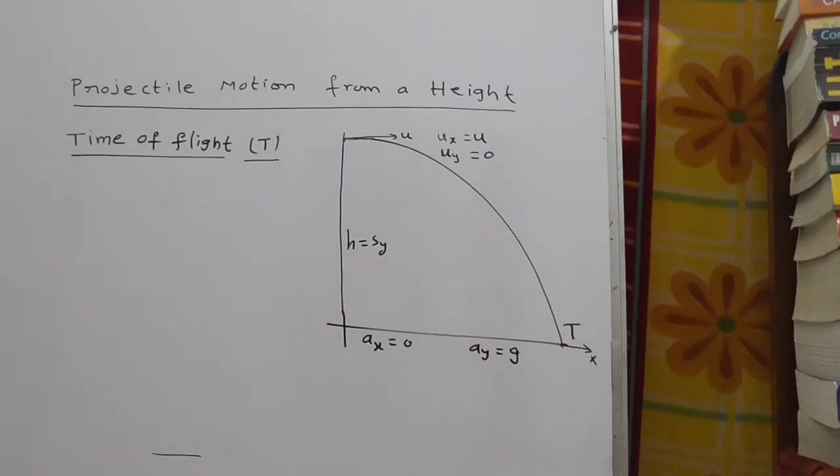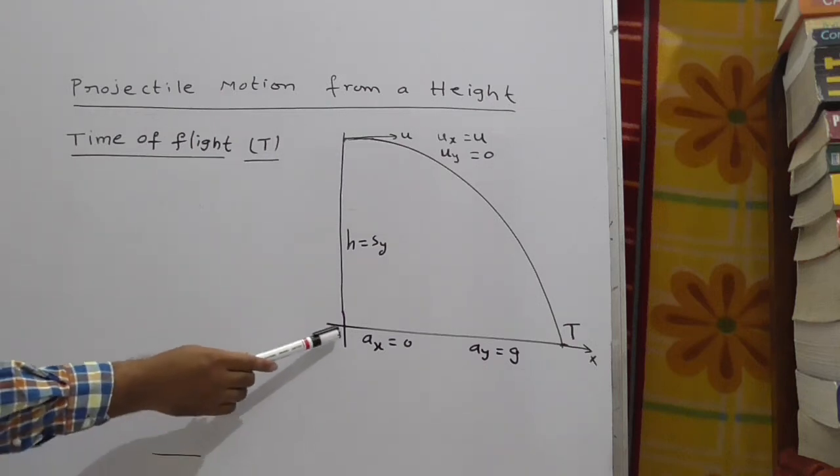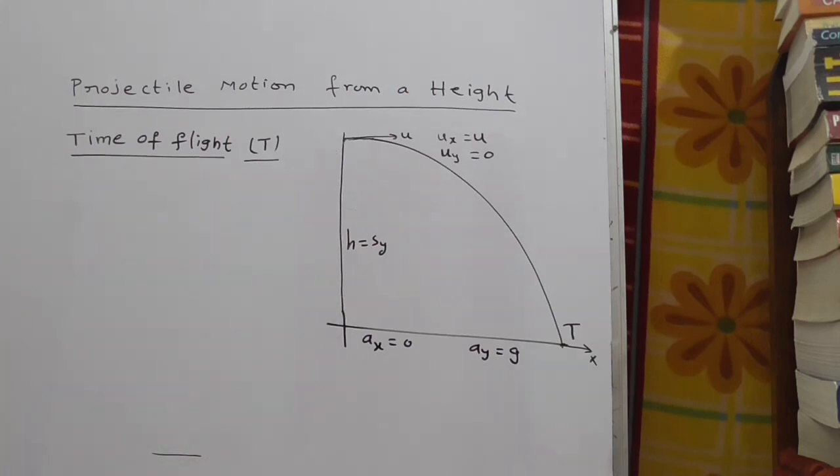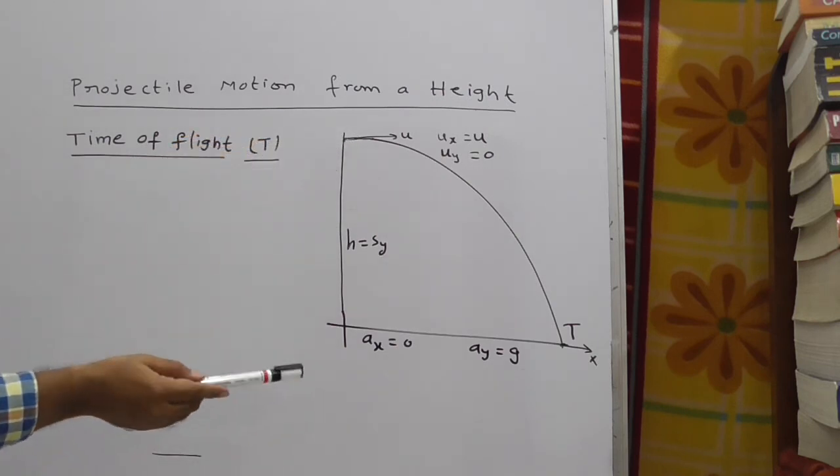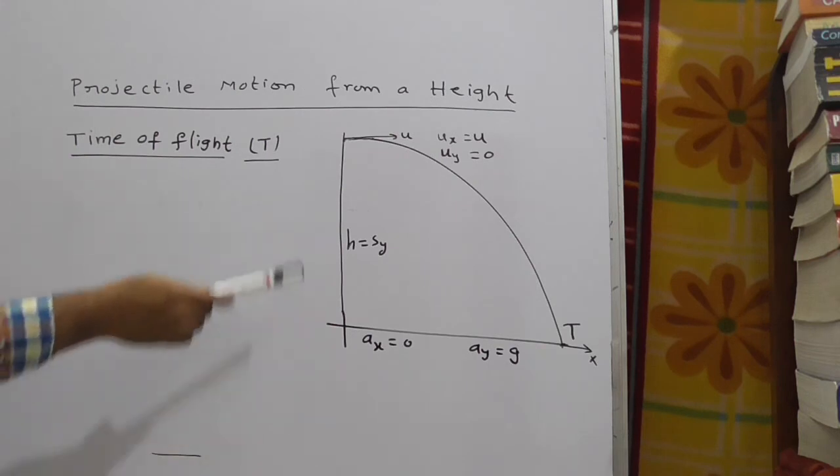The particle is dropped from certain height h. So at initial stage, it moves horizontally. Due to the acceleration due to gravity, it comes down and reaches the earth.